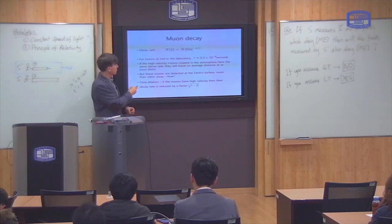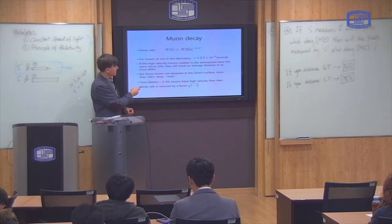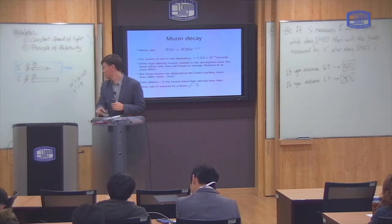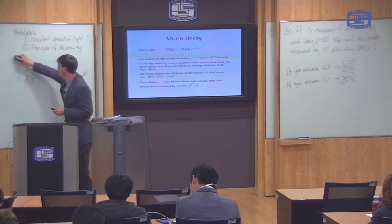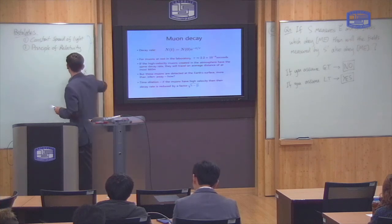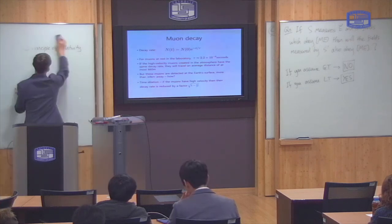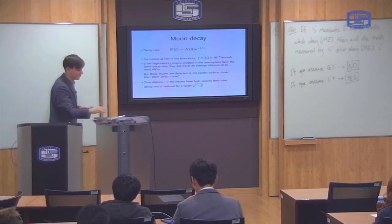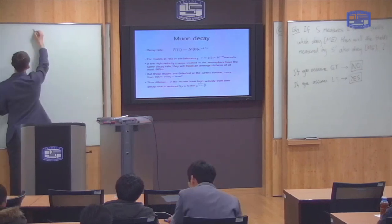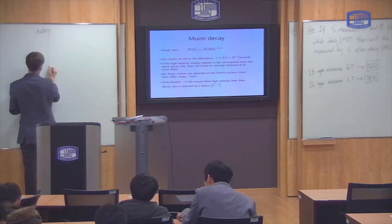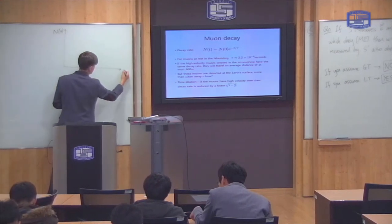Then the number of muons that will be left after a time T is equal to the original population times an exponential factor like this. So, if I draw a graph of that, it's a function of T.